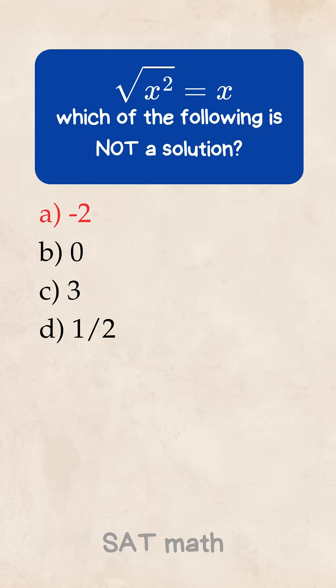Final answer is a, negative 2. Boom. Another SAT trick solved.